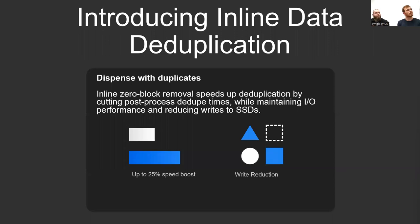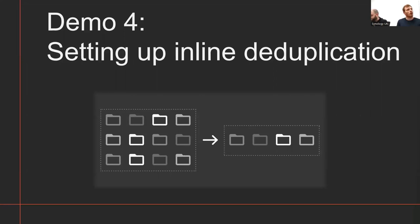Another new feature is inline data deduplication. Previously DSM only performed offline deduplication — a scheduled task that finds and clears duplicate data after the fact. With inline deduplication, the system can now process and reduce duplicate data while it is writing, giving immediate benefits. This is especially useful if your drives are getting towards full capacity and you're uploading large files. The offline deduplication schedule still runs as normal — inline is just an optional extra on top.